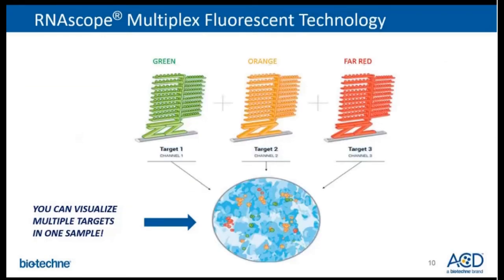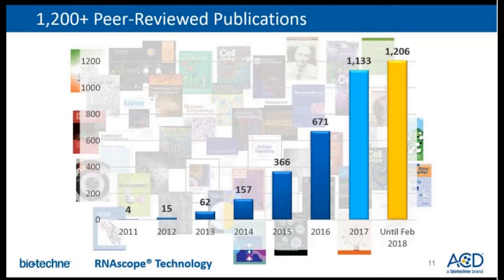RNA scope fluorescent multiplex assay allows simultaneous detection of three RNA targets within a single sample, using three target probes each optimized for a different probe channel: C1, C2, or C3. To date, we currently have over 1,200 peer-reviewed publications using the RNA scope technology, showing increased market adoption of RNA scope assays utilized in many different research and application areas.